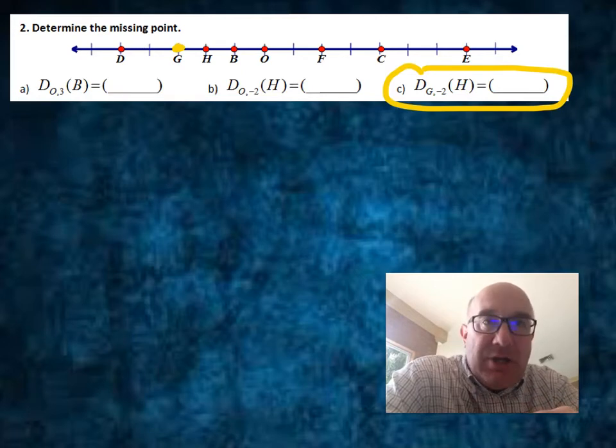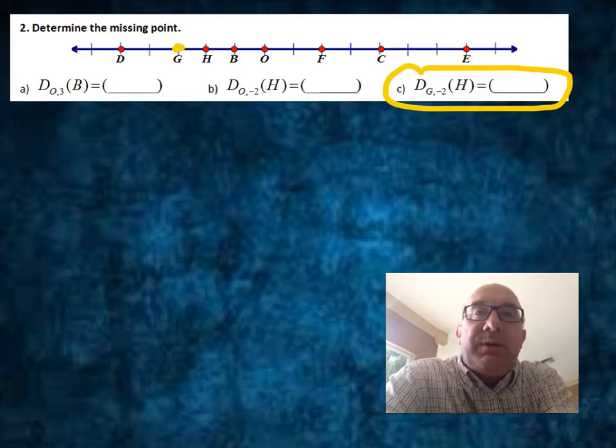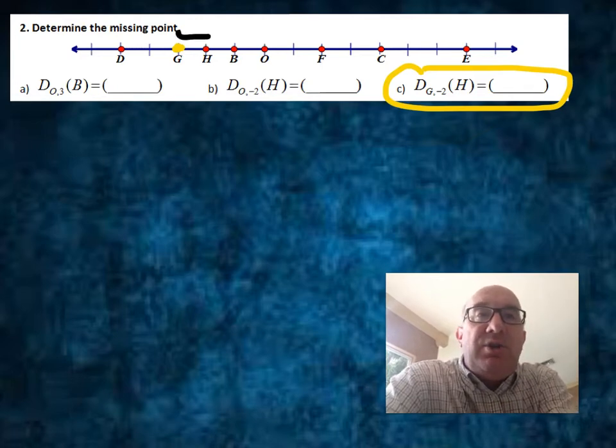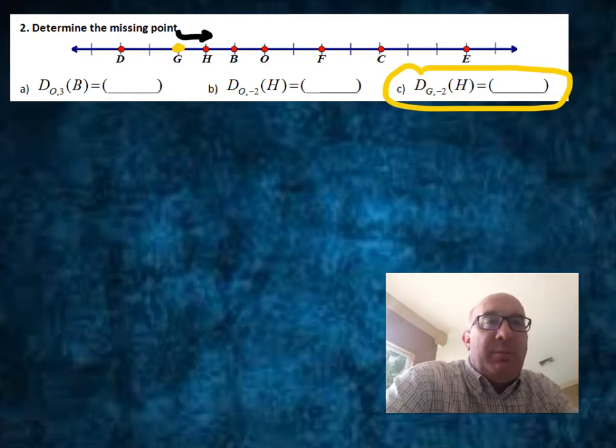The distance H from G, let me get something here that will show up. So the normal distance to H is right to there. That's going to the right on the number line.